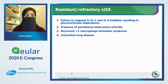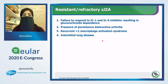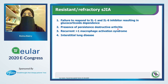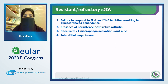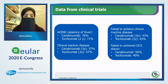VAS Vestert defined resistance or refractory systemic JIA as patients who failed response to IL-1 and IL-6 inhibitors resulting in steroid dependence, plus the presence of persistent destructive arthritis, recurrent macrophage activation syndrome — more than one episode — and the presence of interstitial lung disease.